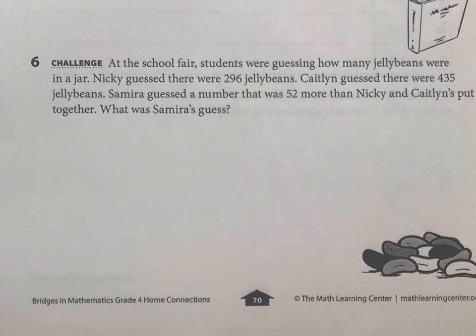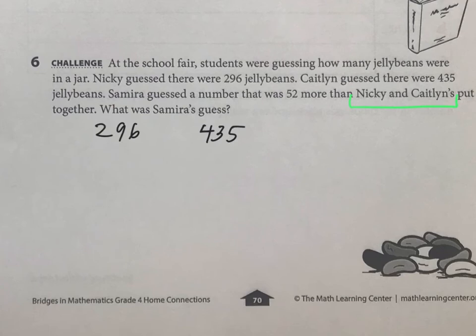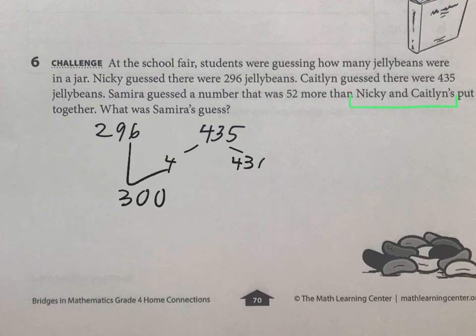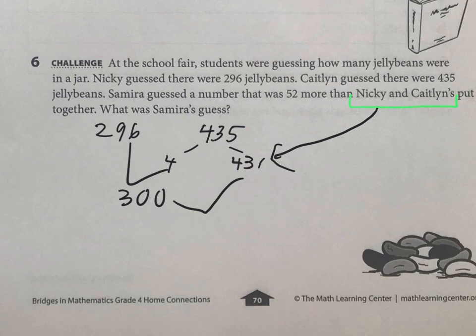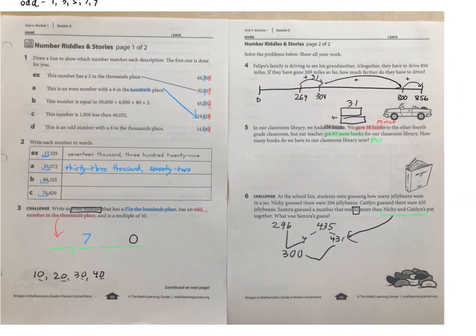Last one — the challenge. We have 296 jelly beans from Nikki and Caitlin was guessing 435 — we need to put those together. Since 296 is almost 300, take 4 from 435, leaving 431, and now you have 300. Add those together — you can almost do that in your head. But don't forget, once you have that total for Nikki and Caitlin, Samira gets 52 more, so add 52 from there. That's enough to get you through this — Number Riddles and Stories. Thank you.